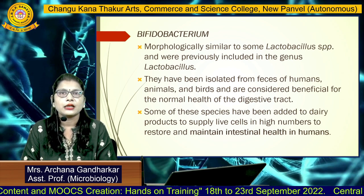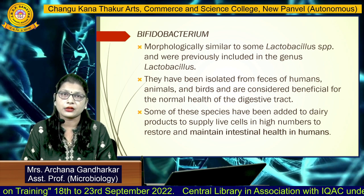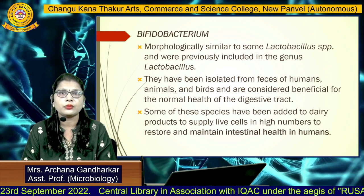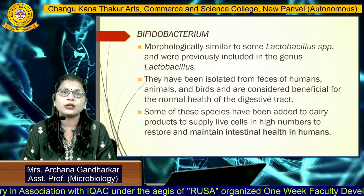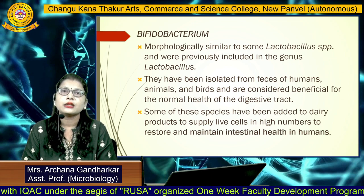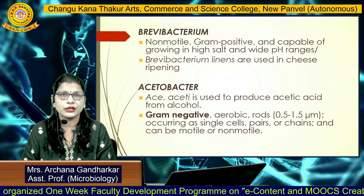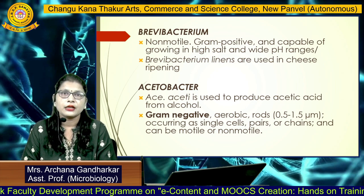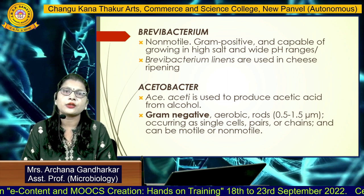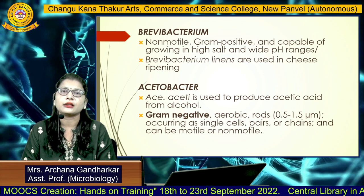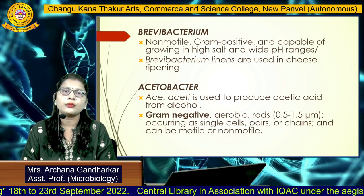The next organism is Bifidobacterium, also used as a probiotic. Bifidobacterium is morphologically similar to some Lactobacillus species, and was previously included in the genus Lactobacillus. It is isolated from the fecal matter of humans, animals, and birds, and is considered beneficial for the normal health of the digestive tract. Some organisms are added to dairy products to maintain intestinal health — the best example being Yakult. Bifidobacterium linens are used in cheese ripening. Next is Acetobacter aceti, used for acetic acid production from alcohol. These organisms are gram-negative, aerobic rods occurring in single cells, pairs, or chains, and can be motile or non-motile.